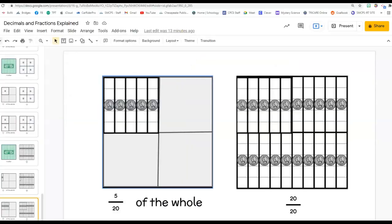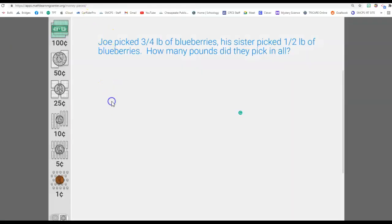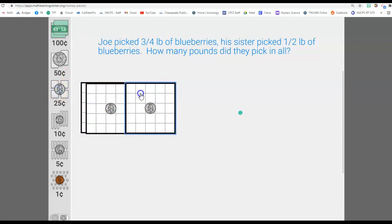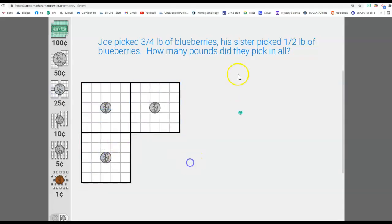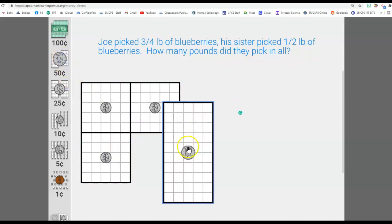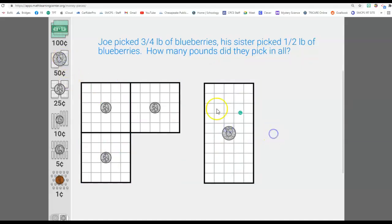Okay, now let's do a problem with all this knowledge that we've done. So here we have Joe picked three fourths of the blueberries. His sister picked one half pound of blueberries. How many pounds did they pick in all? Well, if he picked three fourths, let me pull out three fourths. Okay, and then if his sister picked half a pound, I can pull out one of these.